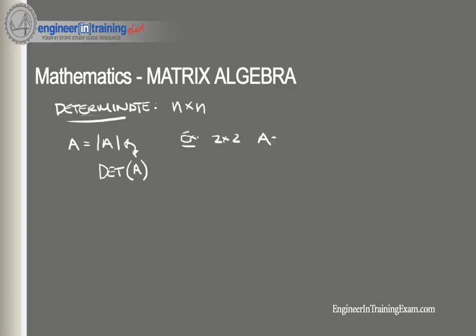Say matrix A has the terms a, b, c, d. To find the determinant of this matrix, all we need to do is multiply a times d minus b times c, and that will give us some number, the determinant of that two by two matrix.